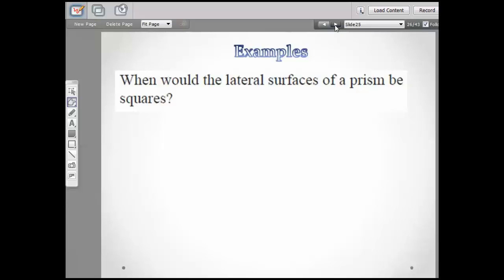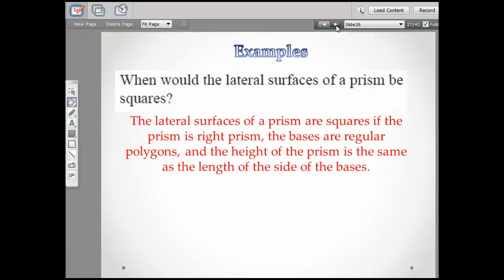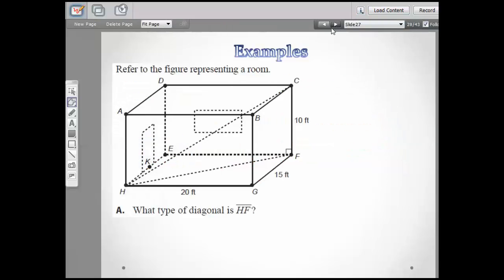When would the lateral surfaces of a prism be squares? I would say when it's a cube, but let's see what we got going here. The lateral surfaces of a prism are squares if the prism is a right prism, the bases are regular polygons, and the height of the prism is the same as the length of the side of the bases, which is all still a cube.